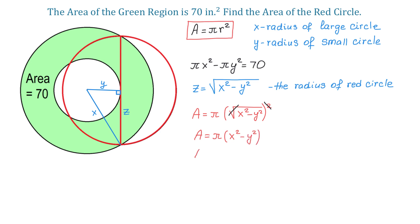If we remove the parenthesis, we will get that A equals pi X squared minus pi Y squared. And now, from above, we know that pi X squared minus pi Y squared equals 70. Then, we can say that the area of the red circle is 70 square inches.